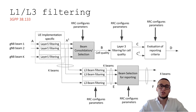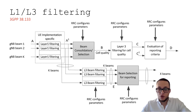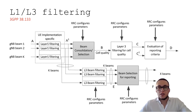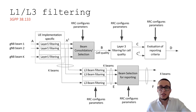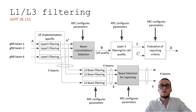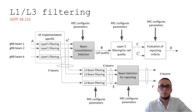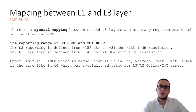This picture from 3GPP specification shows: on the left, multiple beams are received from the base station. At layer one, the UE filters those results. Then at the RRC layer, the UE consolidates, selects, or averages measurements from different beams to evaluate cell quality. It then filters with specific 3GPP-defined requirements and evaluates criteria for events A1, A2, A4, and B1, which we will discuss in future videos. There is also a mapping between L1 and L3 layers defined in 3GPP specifications.